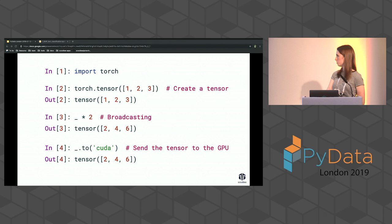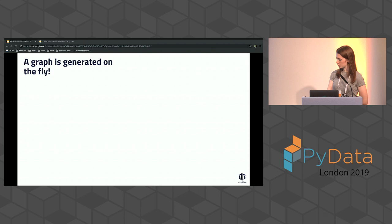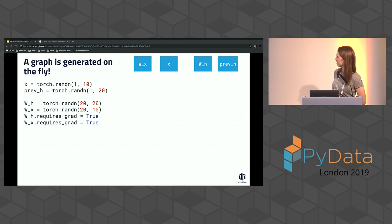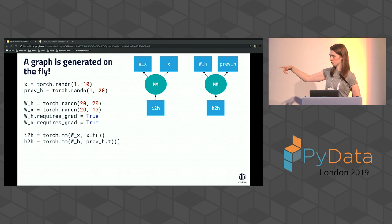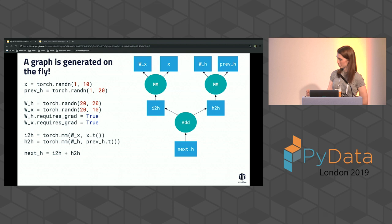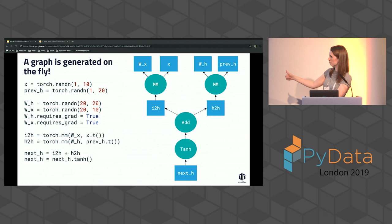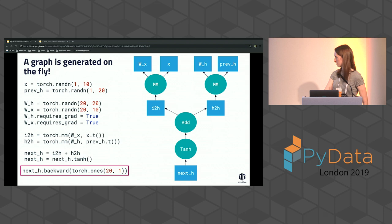What's cool about PyTorch is that we can define variables with x and weights that require gradients, then add more code and the graph starts to fill up. Torch.mm is matrix multiplication — we add these operations and start building our graph. You can see the computation graph is being generated on the fly as we define our code, instead of all in one step. When you want to do back propagation, you just call .backward().